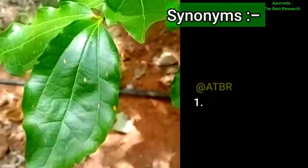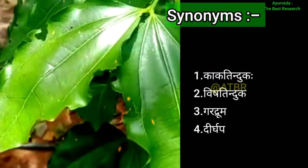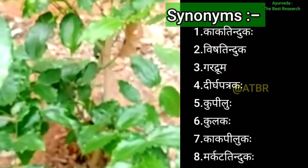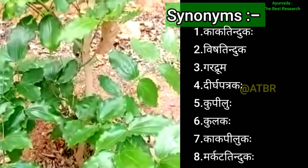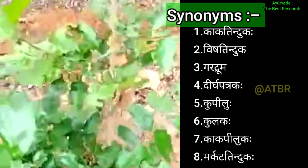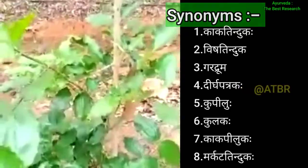Synonyms are Kakatindu, Vishatindu, Garadruma, Dirgapatra, Kupilu, Kula, Kakapilu, and Margata tindu. Habitat: the Kupilu tree is commonly growing in forests of the South Indian states.